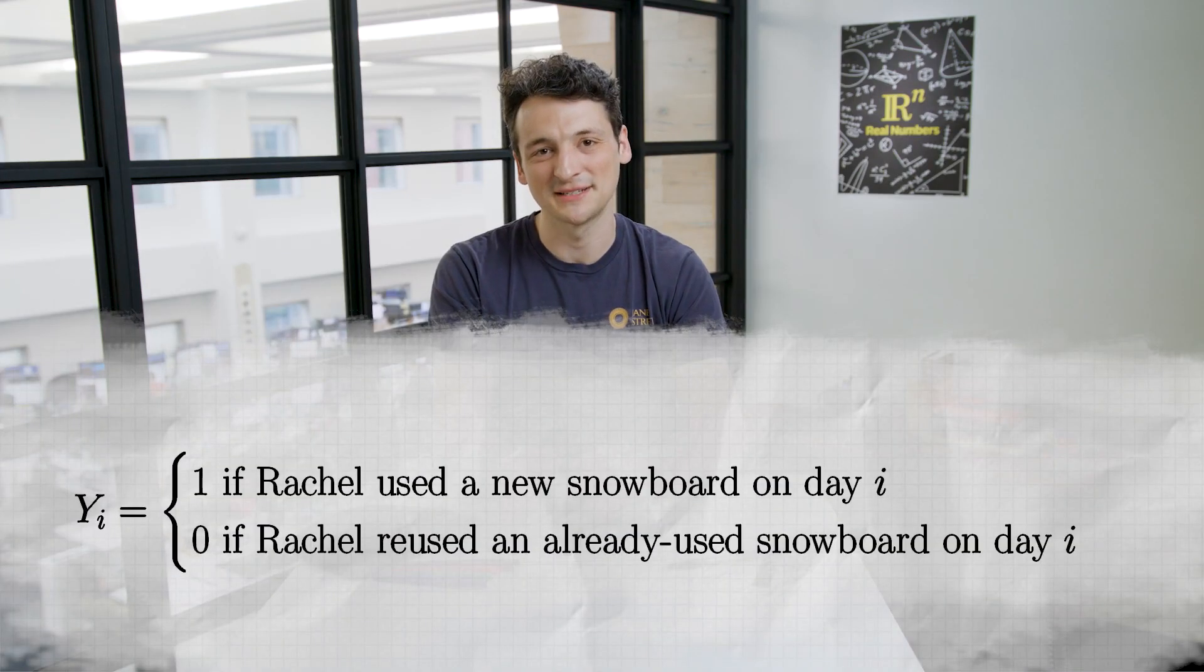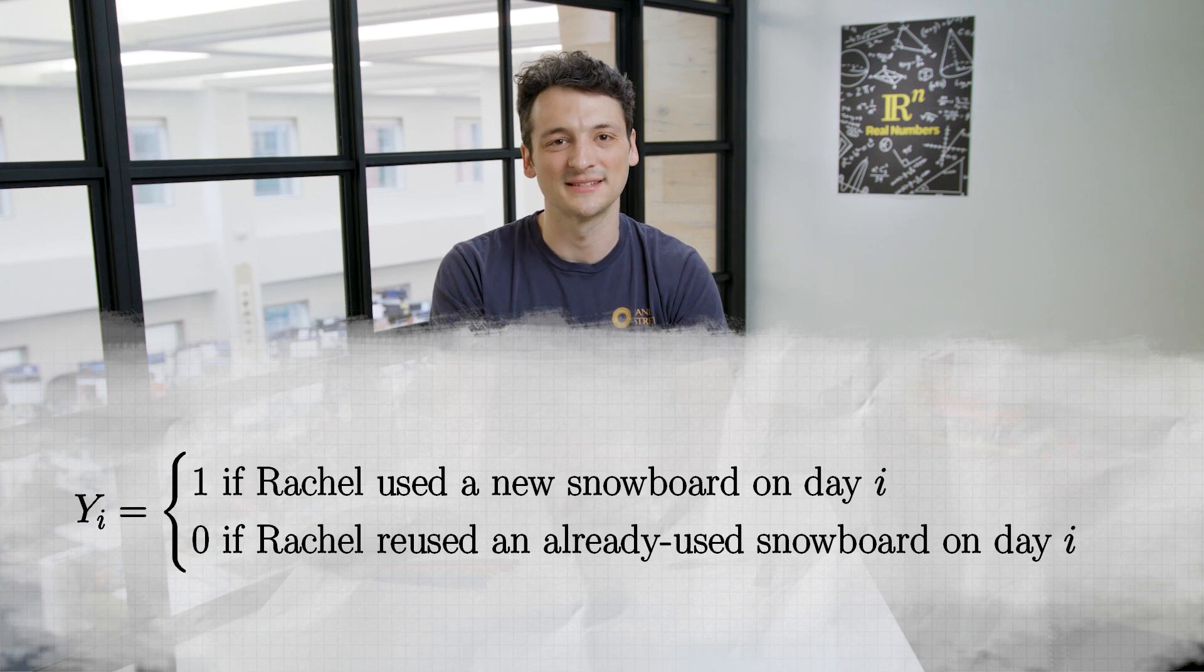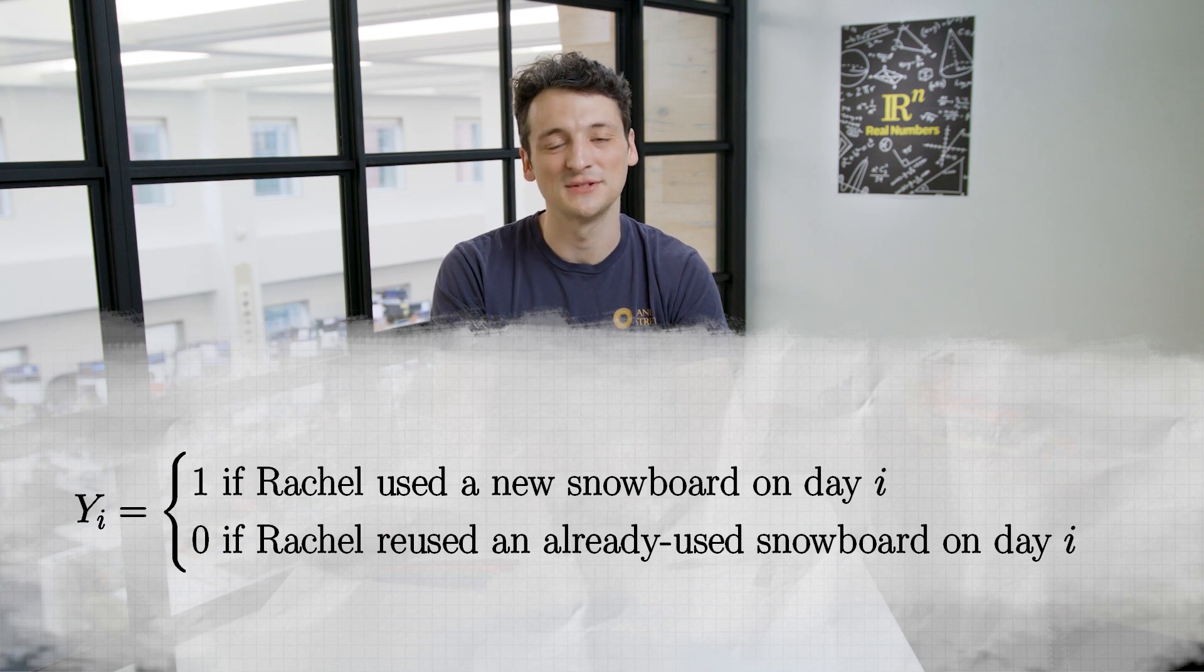Let's define y sub i to be the indicator variable that is 1 when, on the ith day, Rachel used a snowboard for the first time this week, and is 0 otherwise. So, for example, y sub 1 equals 1 always, because the first day of the week is always a new snowboard.